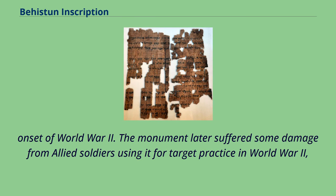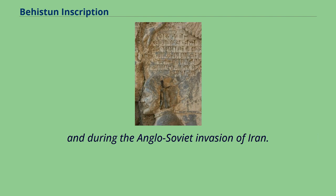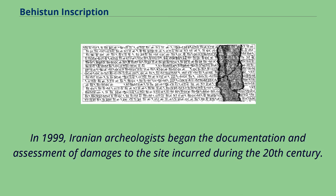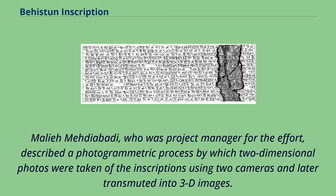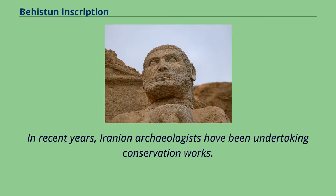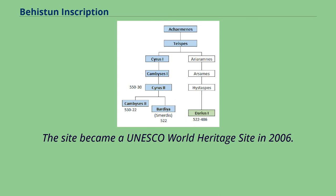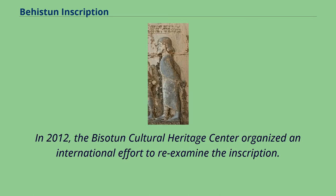The monument later suffered some damage from Allied soldiers using it for target practice in World War II, and during the Anglo-Soviet invasion of Iran. In 1999, Iranian archaeologists began the documentation and assessment of damages to the site incurred during the 20th century. A photogrammetric process was used by which two-dimensional photos were taken of the inscriptions using two cameras and later transmuted into 3D images. In recent years, Iranian archaeologists have been undertaking conservation works, and the site became a UNESCO World Heritage Site in 2006. In 2012, the Bisitun Cultural Heritage Centre organized an international effort to re-examine the inscription.